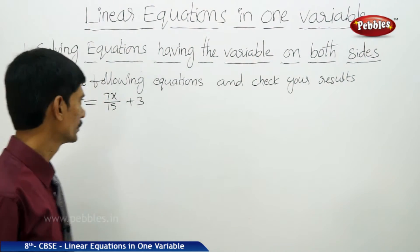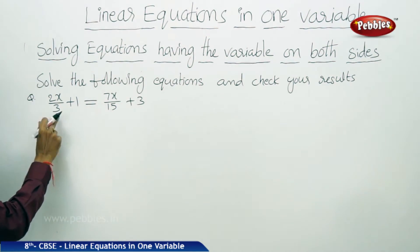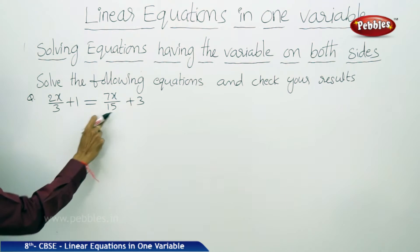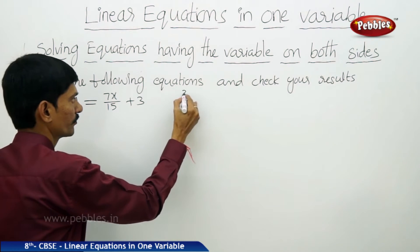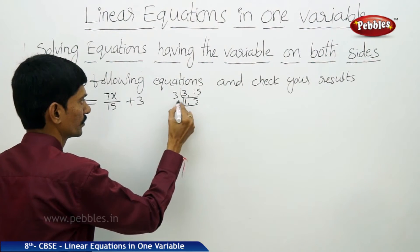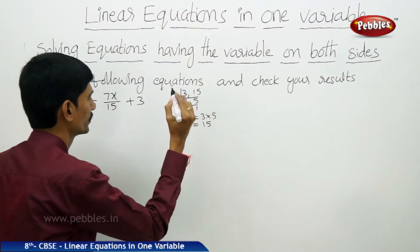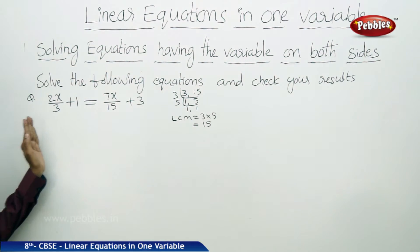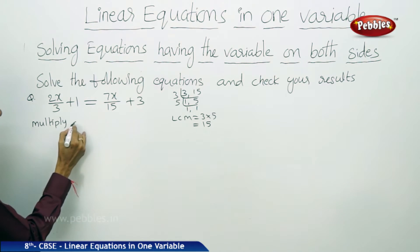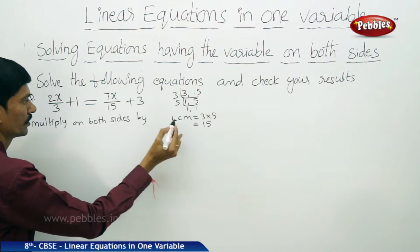Now let us solve: 2x by 3 plus 1 equals to 7x by 15 plus 3. Here we have expressions with fractions. We find the LCM of both denominators 3 and 15. That gives LCM equals 3 into 5, which is 15. We multiply the equation on both sides by 15.